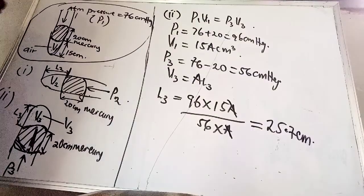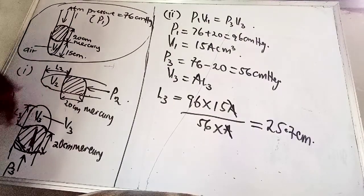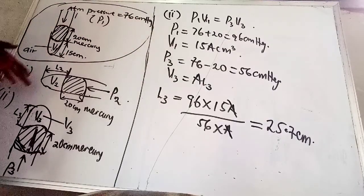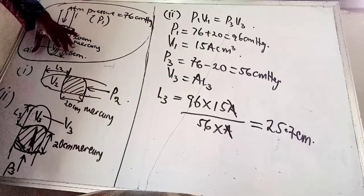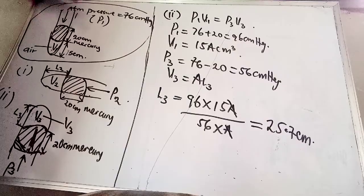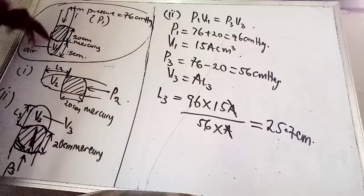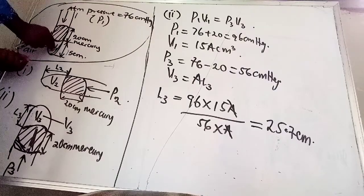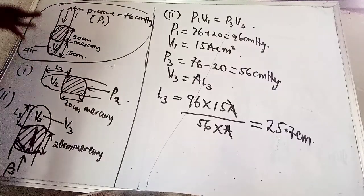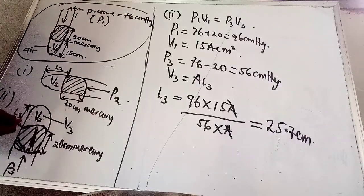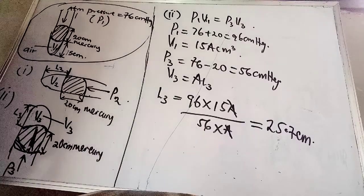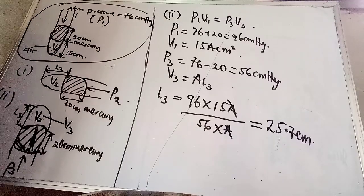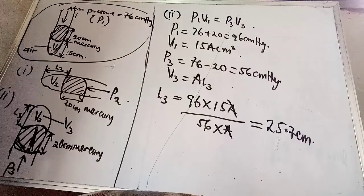The air column length in the inverted position (25.7 cm) is greater than in the initial position (15 cm). This is because in the initial position, both mercury and atmospheric pressure act on the air column, compressing it — the higher the pressure, the lower the volume. In the inverted case, pressure is reduced. That is the end of this question. Please subscribe and share. See you in the next video.